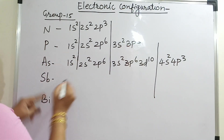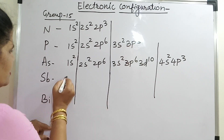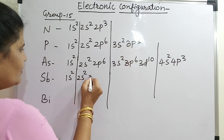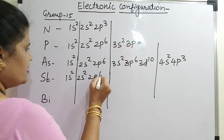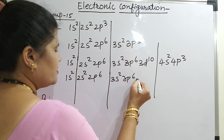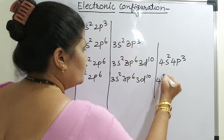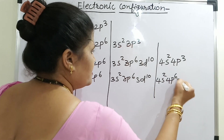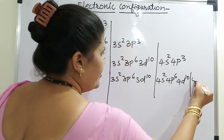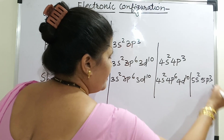Let us come to antimony. This will be 1s2, then 2s2 and 2p6, then 3s2, 3p6, 3d10, then 4s2, 4p6, 4d10, and then it will be 5s2 and 5p3.